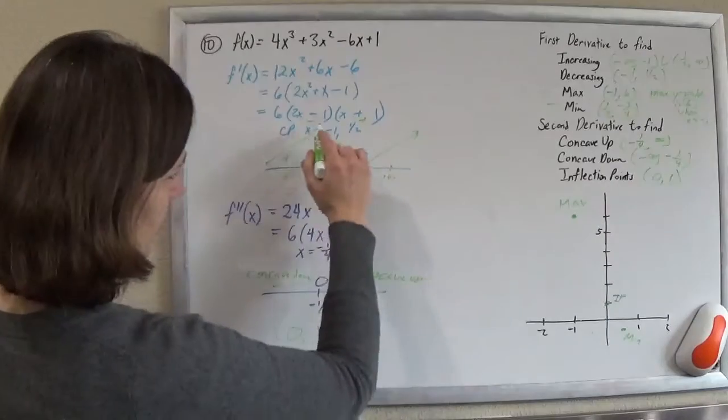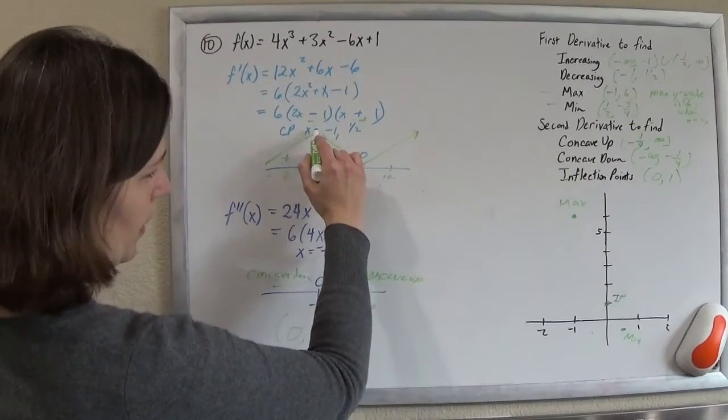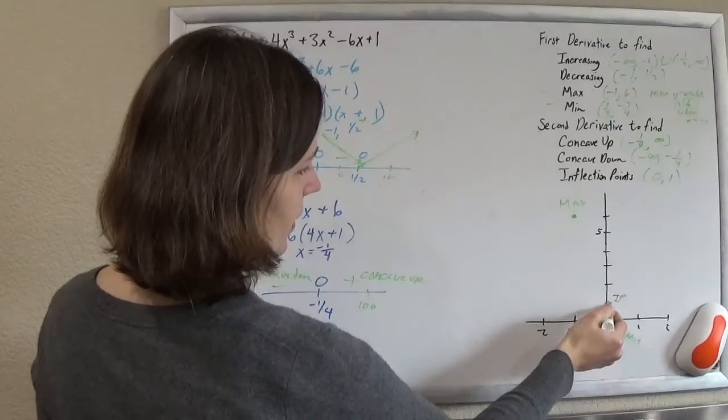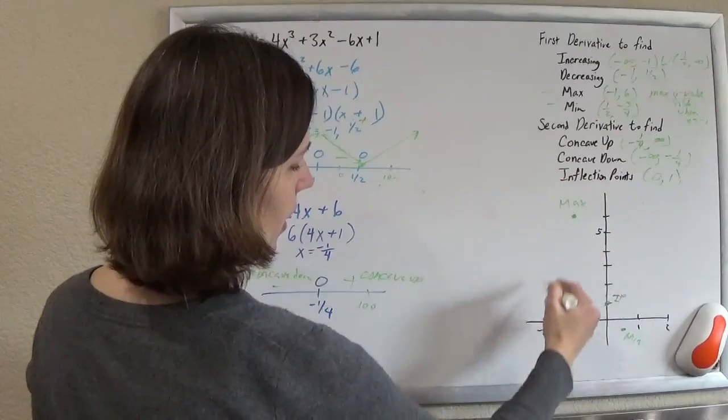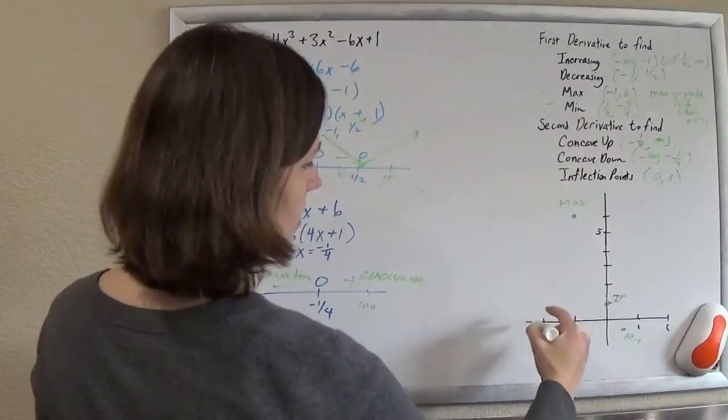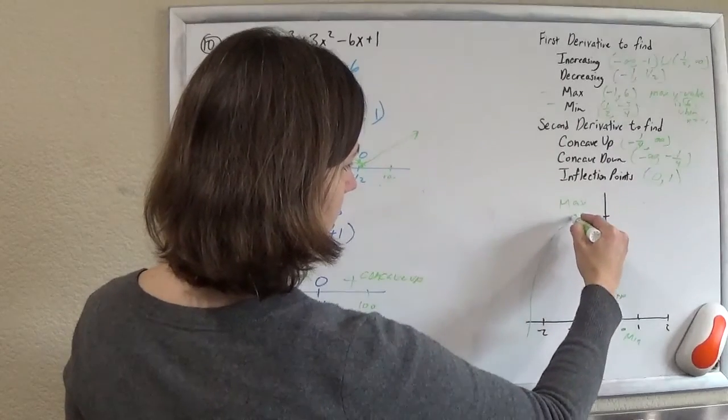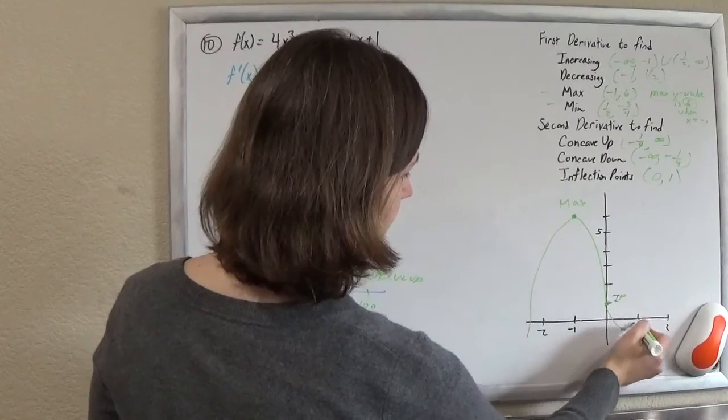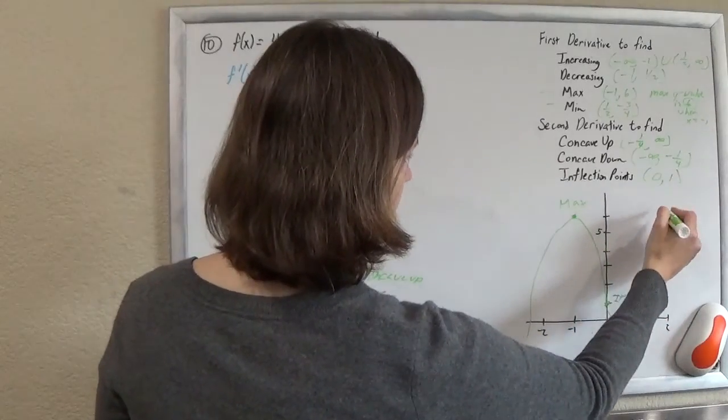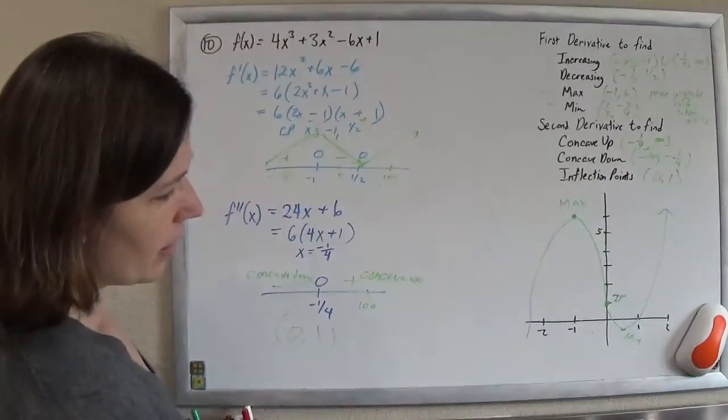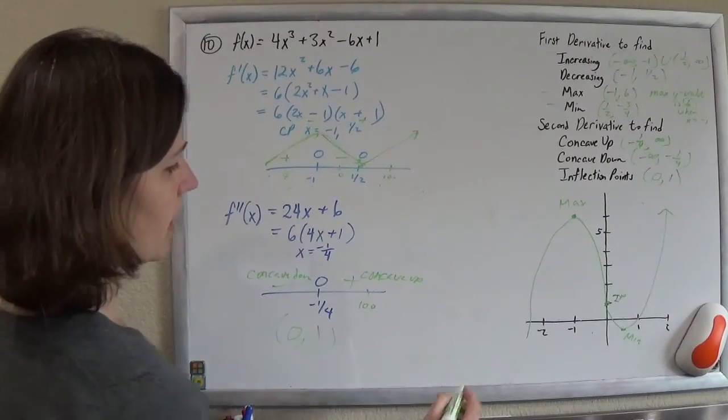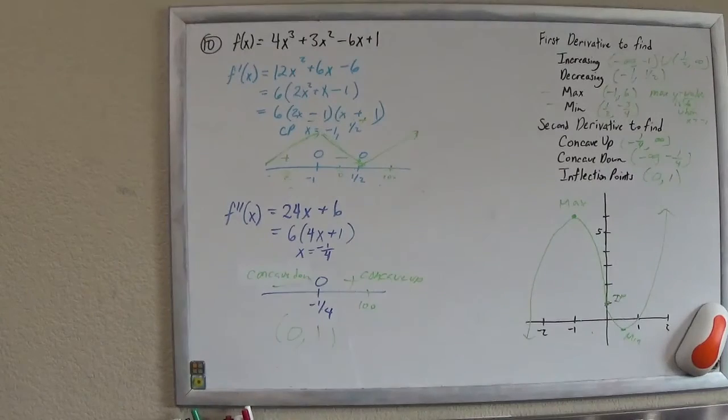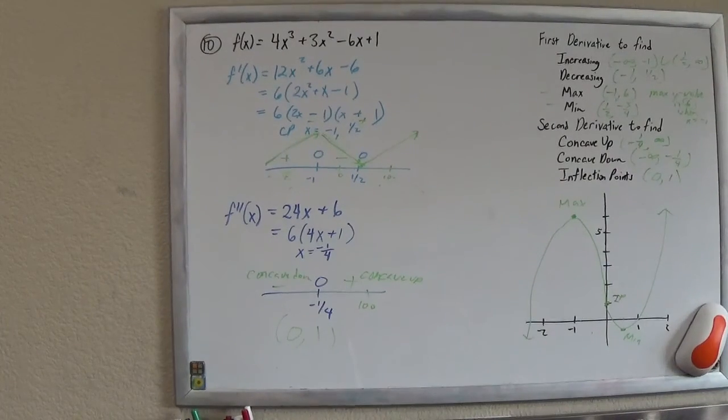And so I know my shape basically looks like this. I'm going to go up till I reach my max, down, till I reach my min, up. But I know that until this inflection point, I am concave down. So, I'm concave down, till there. And then I switch to being concave up, for there. And there we go. That is my graph. Excellent. Excellent. Thank you.